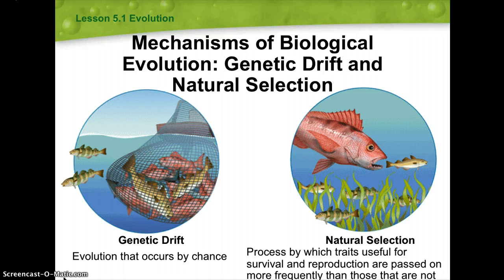Other mechanisms include genetic drift and natural selection. Genetic drift is evolution that occurs by chance — for example, an unusual event like a natural disaster or a fishing net separating most individuals from a population, causing the next generation to have a different gene pool. Natural selection is a process by which traits useful for survival and reproduction are passed on more frequently than those that are not. These favorable traits improve an organism's chances for survival and reproduction and are passed on more than less desirable traits.